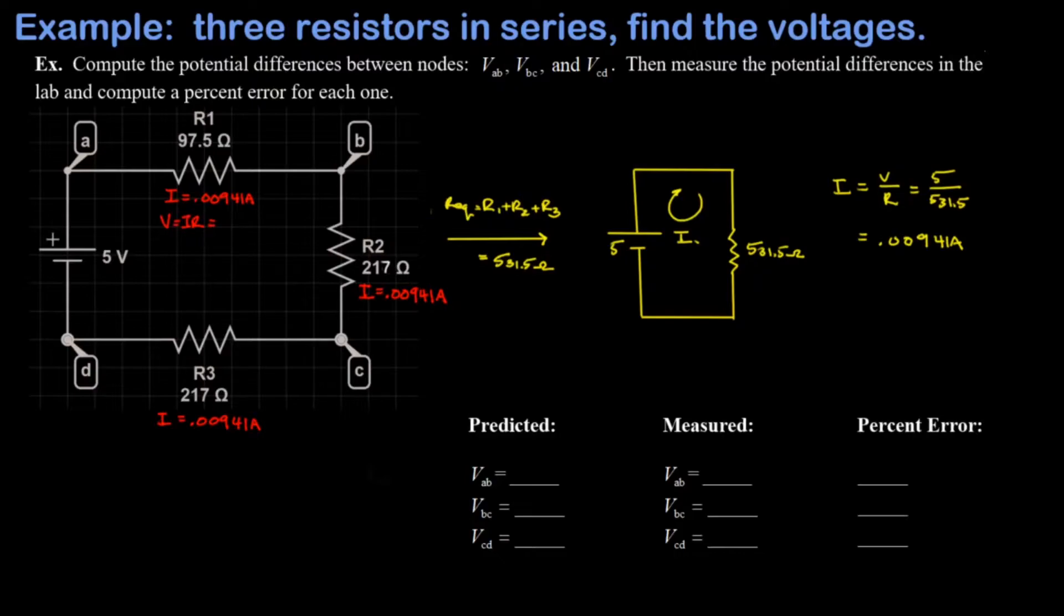So for the first one I get 0.917 volts, and for R2 and R3 I'll get the same answer for each one. I multiply I times R and I get 2.04 volts.